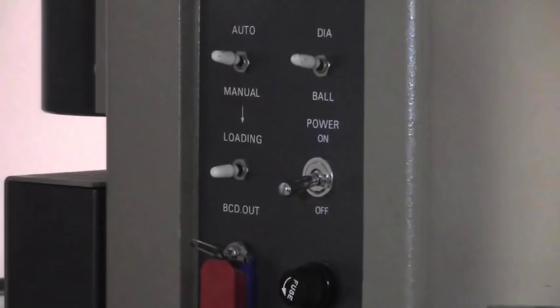On the left side of the machine you can find the control panel. This is where we will turn the machine on. Make sure that the other switches are set to auto, dial, and the loading BCD switch will not be used.